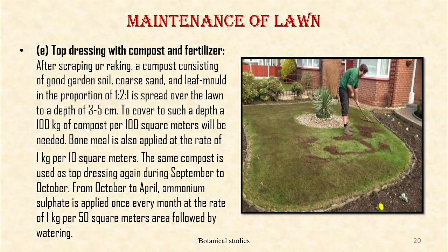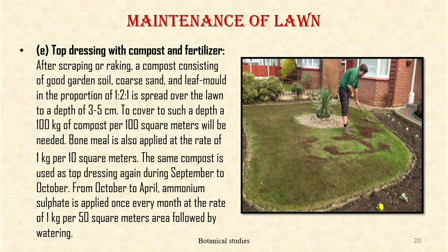Top dressing with compost and fertilizer: After scraping and raking, a compost consisting of good garden soil, coarse sand and leaf mould in the proportion of 1:2:1 is spread over the lawn to a depth of 3 to 5 cm. To cover such a depth, 100 kg of compost per 100 m² will be needed. Bone meal is also applied at the rate of 1 kg per 10 m². The same compost is used as a top dressing again during September to October. From October to April, ammonium sulphate is applied once every month at the rate of 1 kg per 50 m² area, followed by watering.